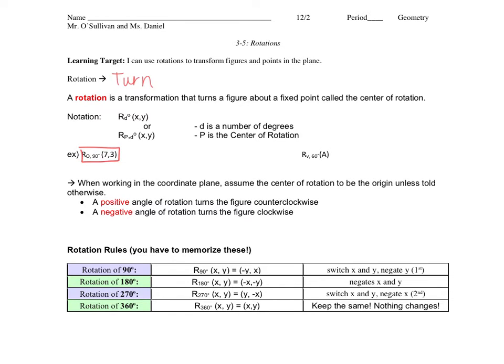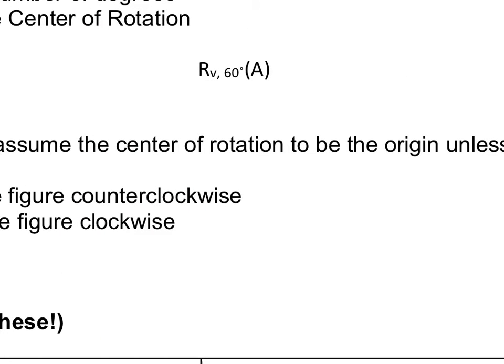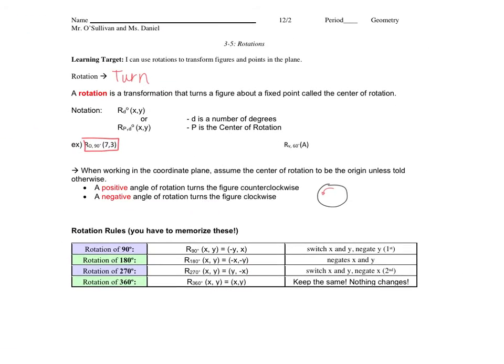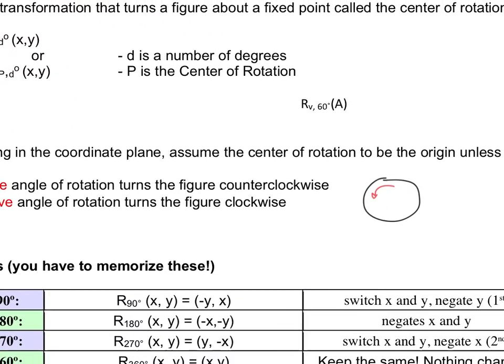A positive angle of rotation turns the figure counterclockwise. So if we look at a clock, this is what we mean by counterclockwise. It's going to go in this direction. A negative angle of rotation turns the figure clockwise. So if I drew a clock it would go in this direction. This is the negative angle, this is the positive angle.